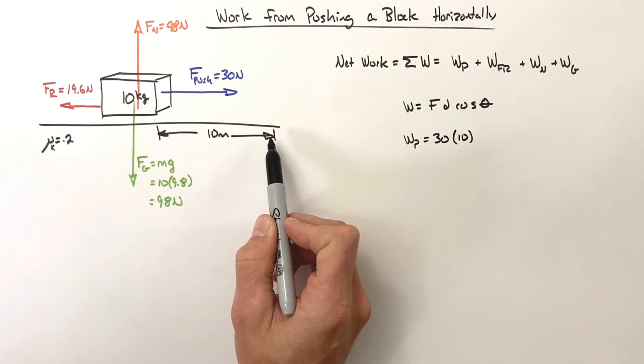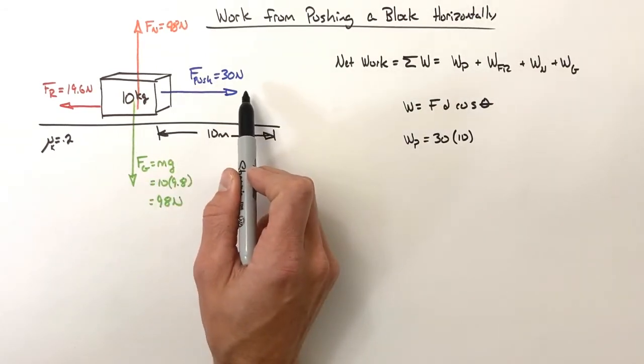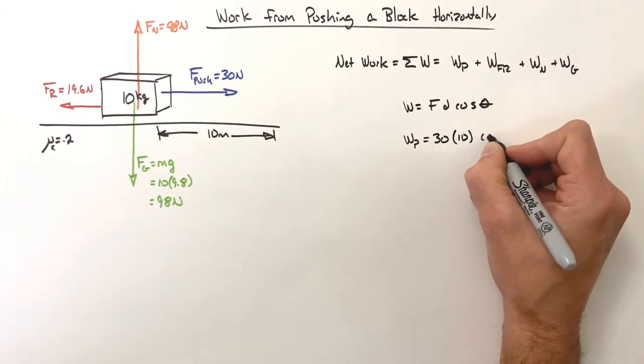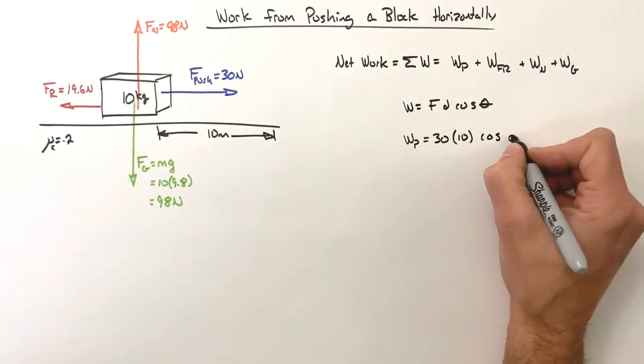Now realize if this block moves horizontally forward 10 meters and the push force is horizontal and forward, the angle between the force and the displacement is zero.